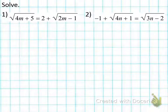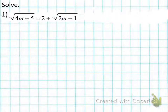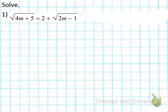Here we go, number one. I'm going to erase number two because I want you to focus just on number one — it takes a lot of work. So we've got square root of (4m + 5) is equal to 2 plus square root of (2m − 1). You're noticing here we have two square root signs, one on the left and one on the right. The first thing I always want to do is isolate one of them. In this case, the left one is already isolated, so I can square both sides.